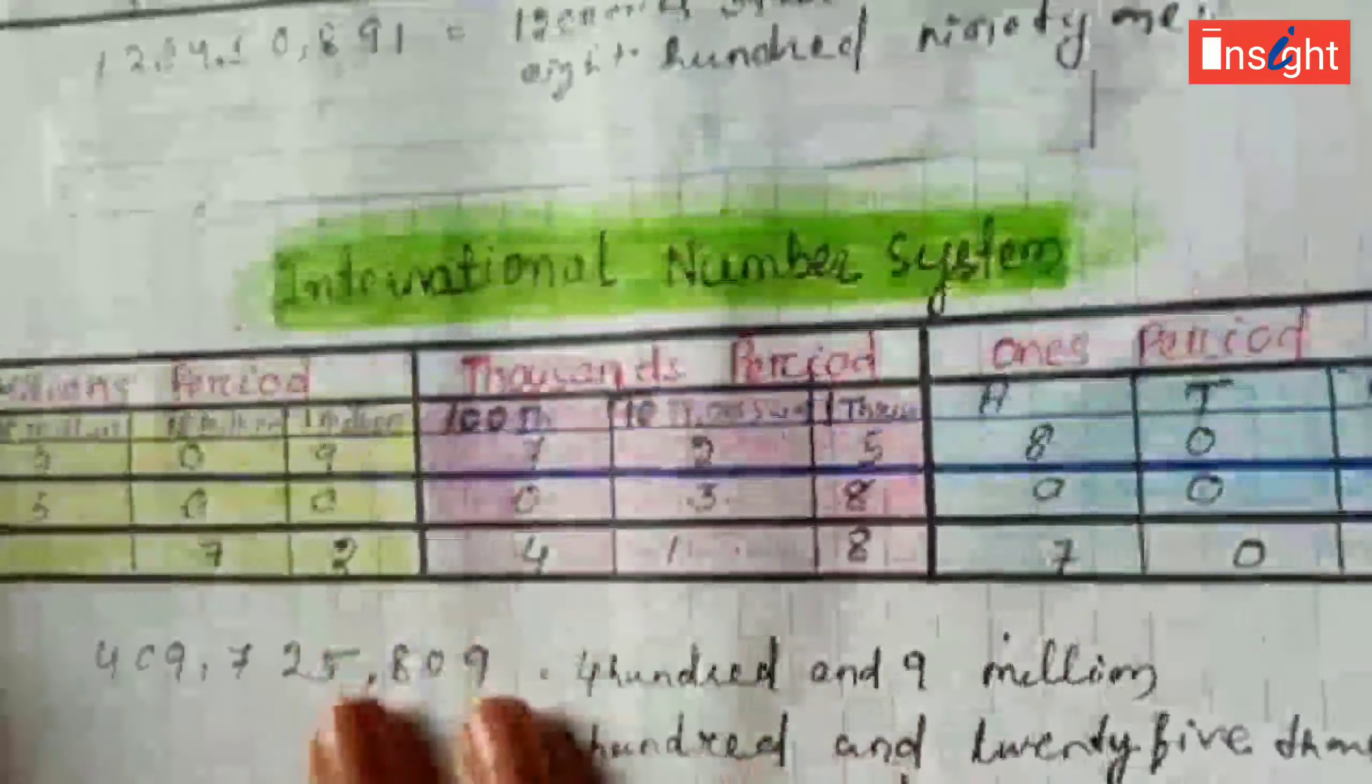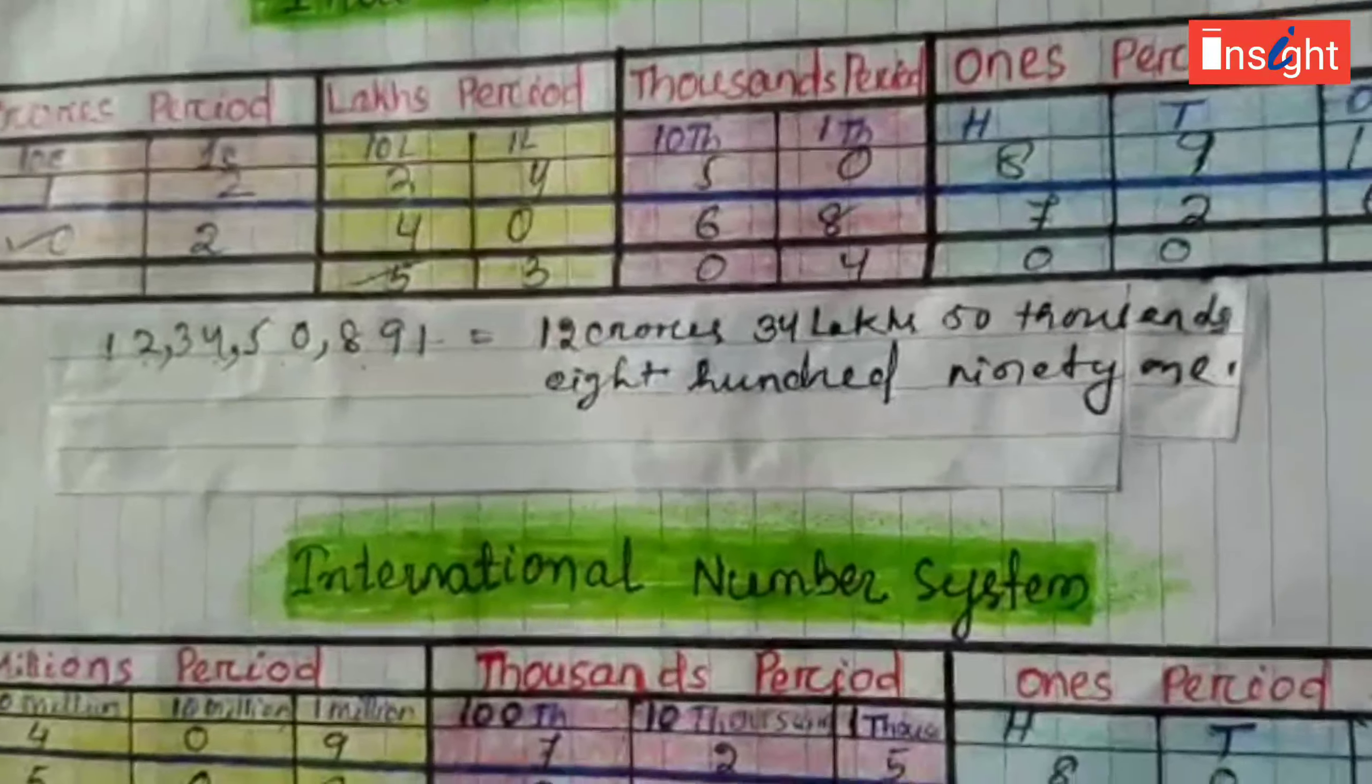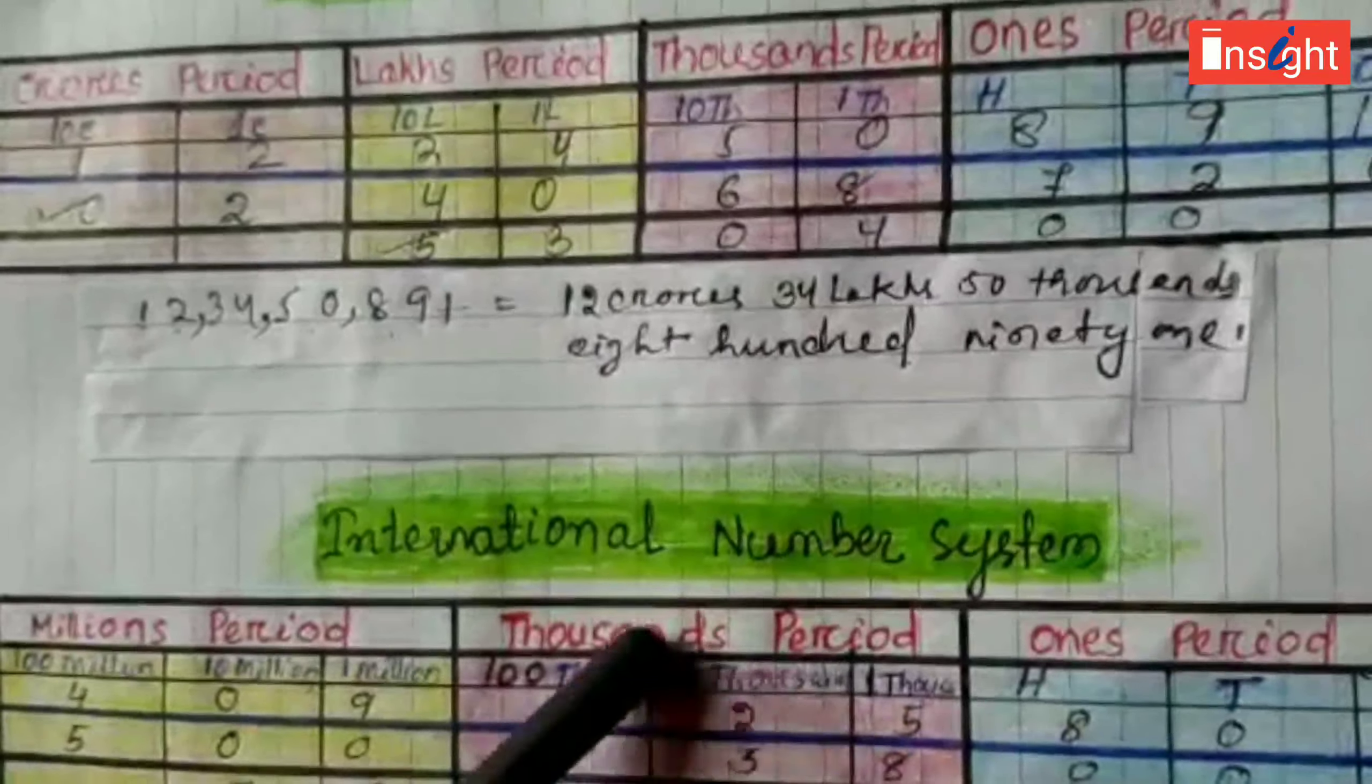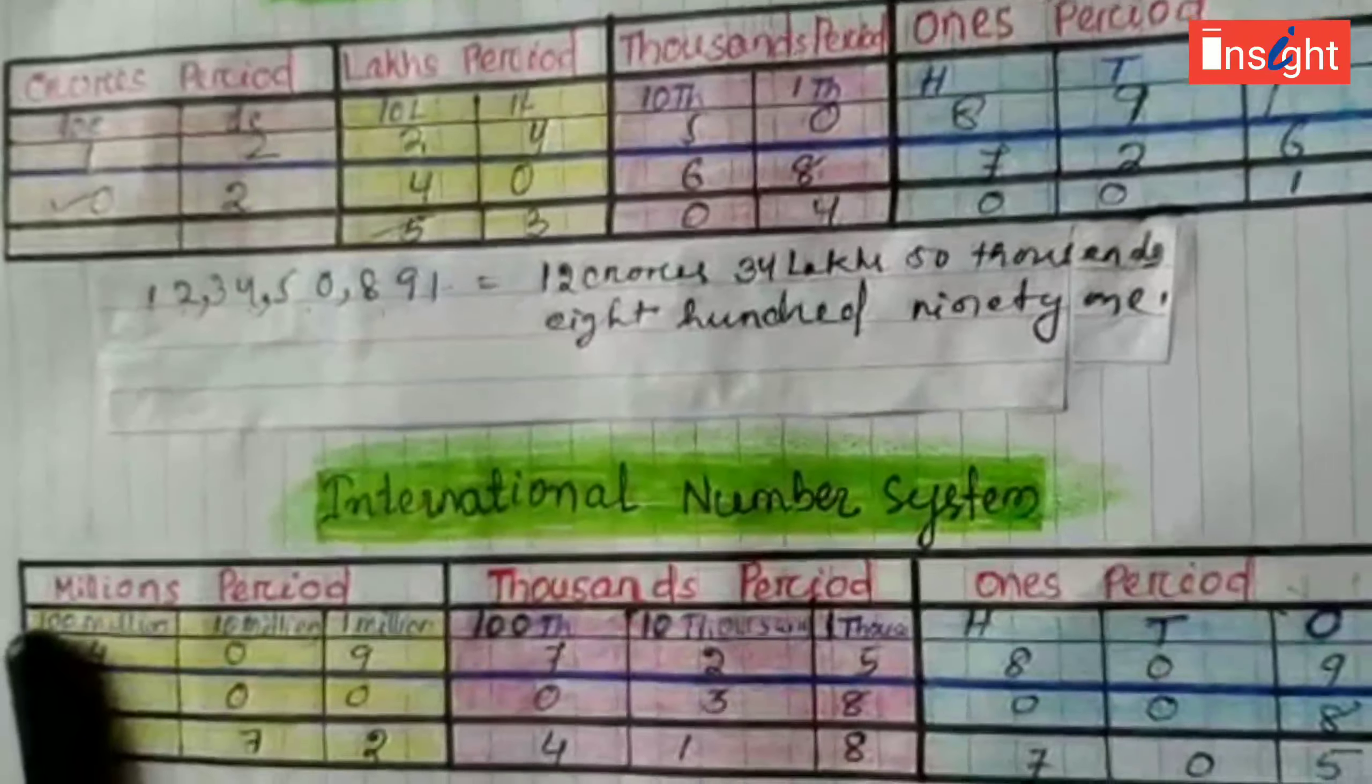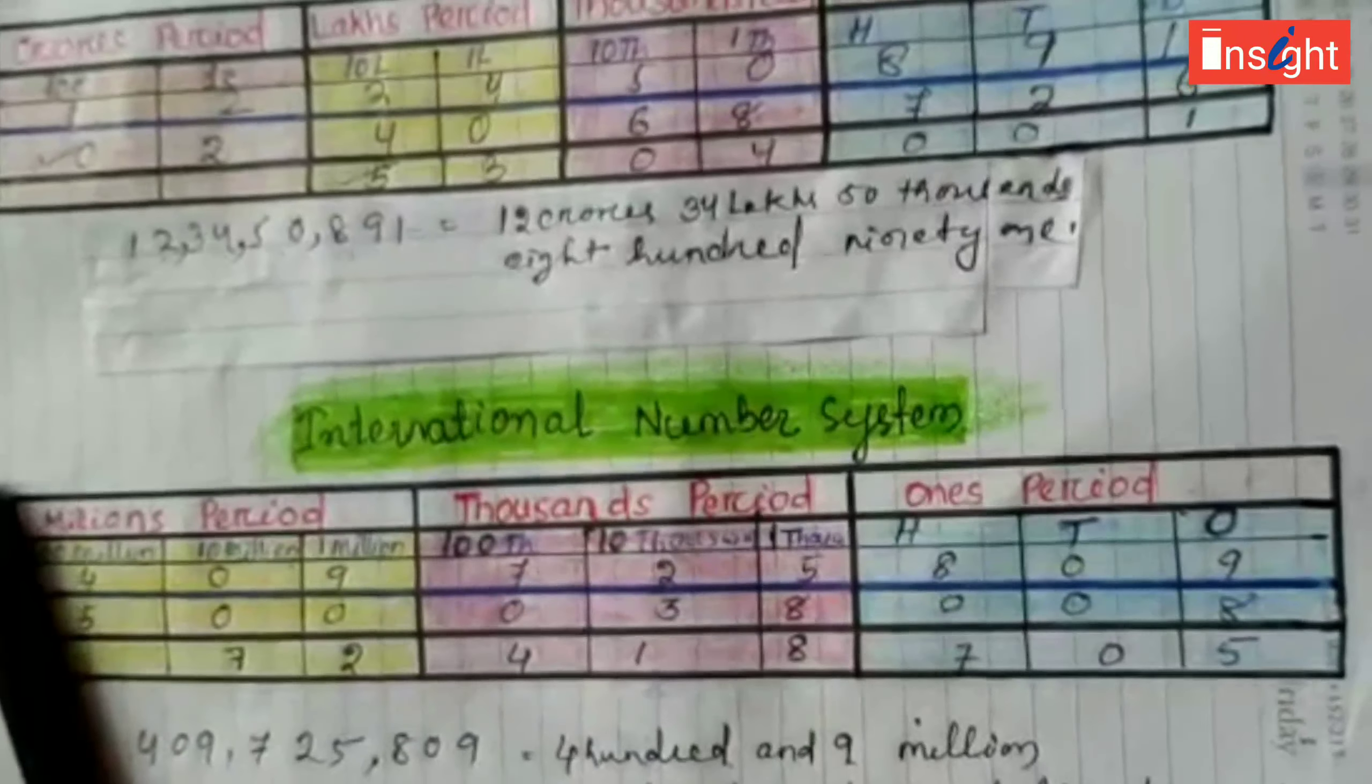So, I hope you all have cleared about Indo-Arabic number system and International number system. Now you can write the number names and put commas correctly. I hope you all have cleared your doubts. So, see you in the next class. Thank you.